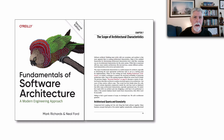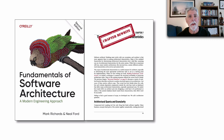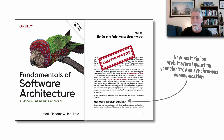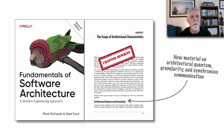Chapter 7 dealt with the scoping of architecture characteristics. In the second edition, this is a complete chapter rewrite. We added a lot of new material and better explained the concept of an architectural quantum. We added aspects of granularity when scoping architectural characteristics and how different communication protocols, specifically synchronous communication, can impact our architectural characteristics.